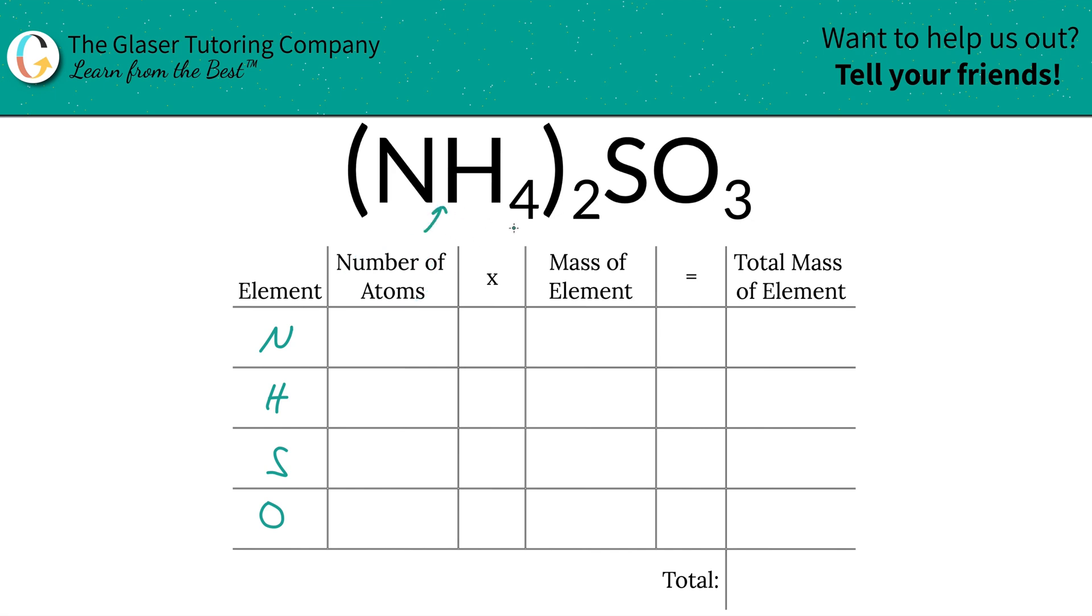Then we're going to identify the number of atoms of each, and that's where the subscripts come into play. Now if you don't see a subscript at the bottom of the element, just simply put a 1 there because that's what it is assumed to be. Now to find the total number of nitrogen, it's going to be 1 here multiplied by the outer subscript. Since this is in parentheses, you have to always take into account that outer subscript. So the total amount of nitrogen is found by taking 1 and multiplying it by 2, so that's 2. Hydrogen, therefore, would be taking the 4 and multiplying it by the 2, so that would be 8. Sulfur, there is only 1. There is no outer subscript there, and the oxygen is indeed 3.